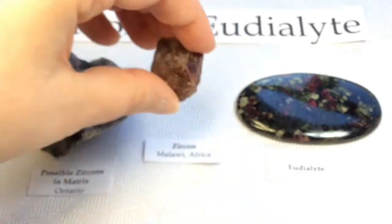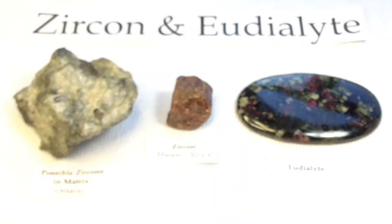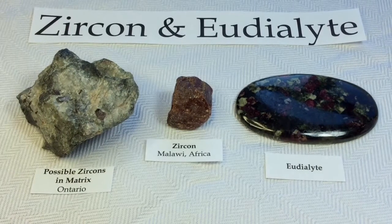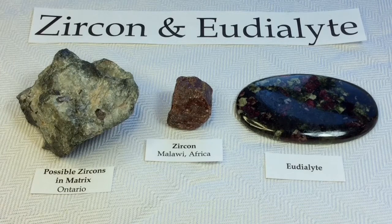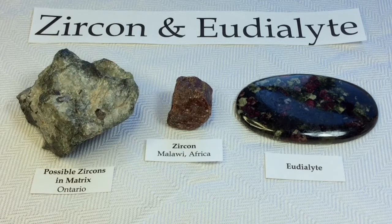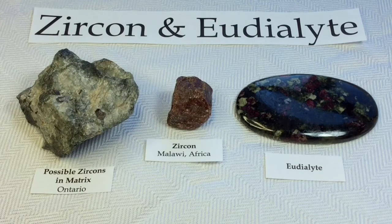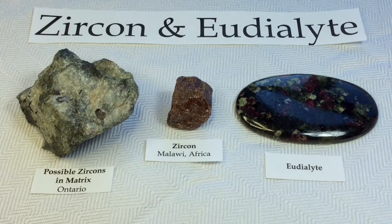Zircon has played an important role during the evolution of radiometric dating. Zircons contain trace amounts of uranium and thorium and can be dated using several modern analytical techniques. Because zircons can survive geologic processes like erosion, transport, and even high-grade metamorphism, they contain a rich and varied record of geological processes.